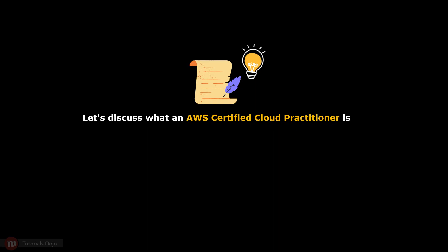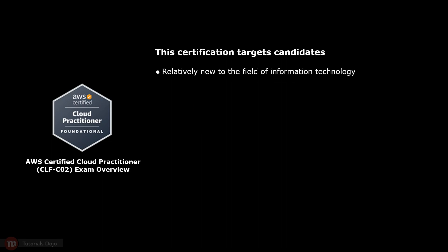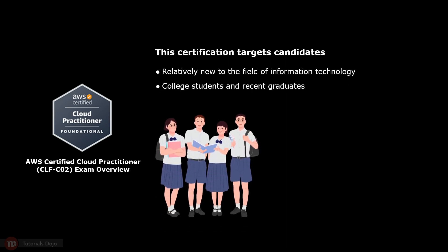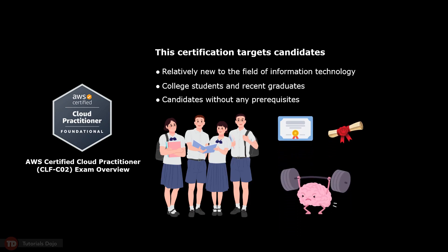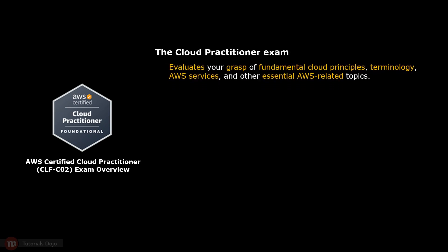Now let's discuss what an AWS Certified Cloud Practitioner is. In December 2017, Amazon Web Services introduced its foundational certification exam known as the AWS Certified Cloud Practitioner. This certification targets candidates who may not have a technical background and those who are relatively new to the field of information technology. This includes college students and recent graduates and is open to candidates without any prerequisites, allowing you to take the exam directly without prior certifications, degrees, or specific training. These candidates might be in the early stages of pursuing an AWS cloud career. It was identified by the exam code CLF-C01, and on September 2023, a new version was released with the exam code CLF-C02.